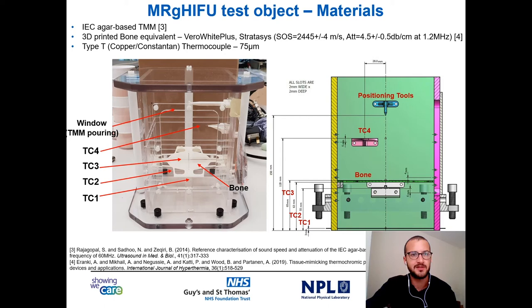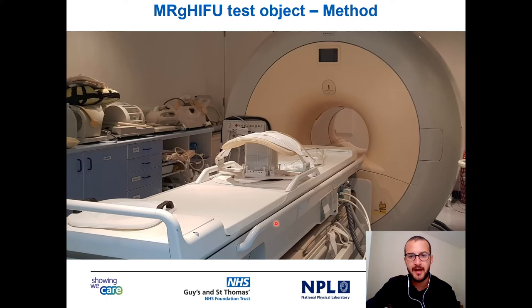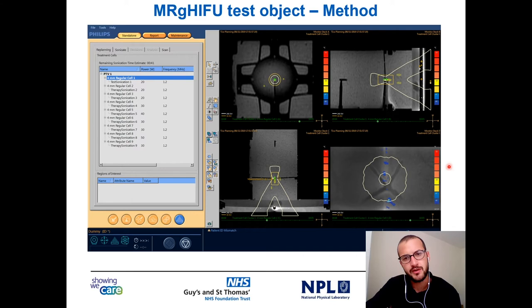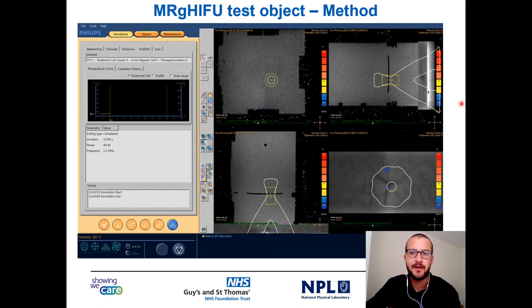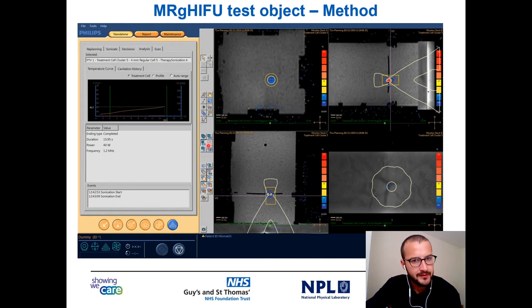Here you can see the setup of the phantom on the Sonalleve. This is the HIFU table, this is the phantom, this is the MRI coil. The HIFU transducer is placed below the phantom. This is a screenshot of the Sonalleve console, so you can see coronal, transverse, and sagittal views of the phantom and monitoring of the near field. You can see the positioning tools and how they help with the identification of the thermocouple, and you can see the 3D-printed bone. What you do is simply place a cell in the region of interest, select the power, press a button, and the sonication will start. MRI thermometry allows temperature monitoring in real time, and the console will tell you information about the power and the length of the exposure.